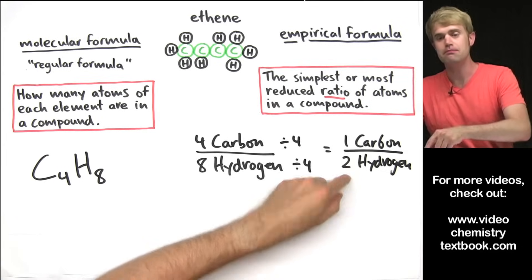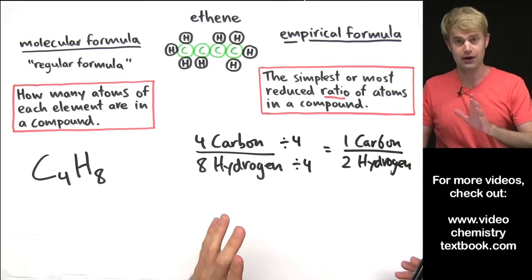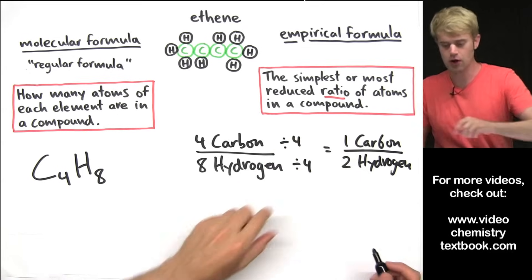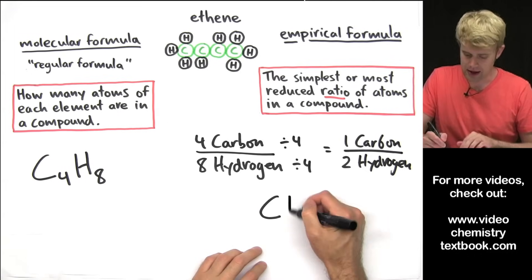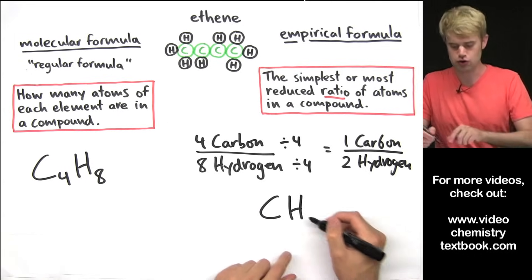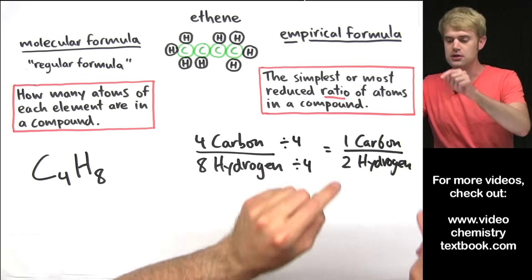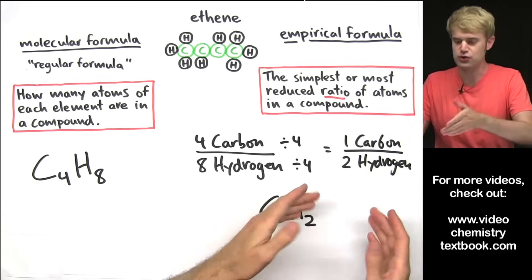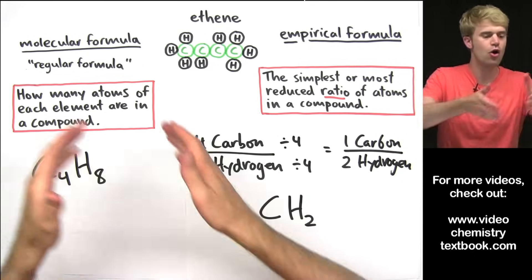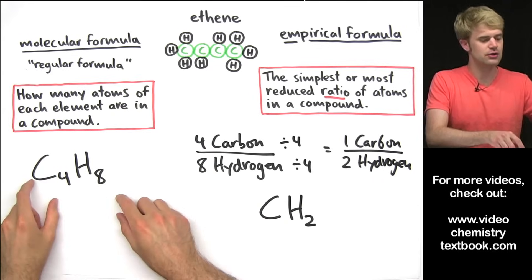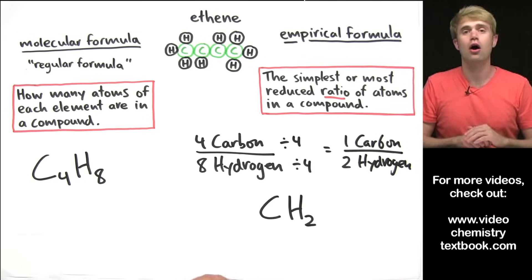Now we write the empirical formula based on this simplified ratio. So it's going to have 1 carbon — C, we don't write anything after it because it's just 1 — and then H2, 2 hydrogens. So CH2 is the empirical formula that represents the simplest or most reduced ratio of the atoms in the compound, whereas the molecular formula tells us how many atoms of each element are in the compound.